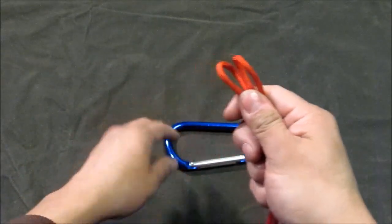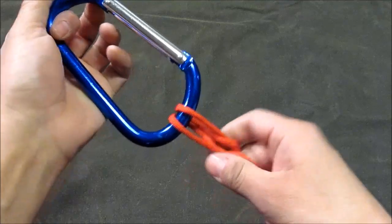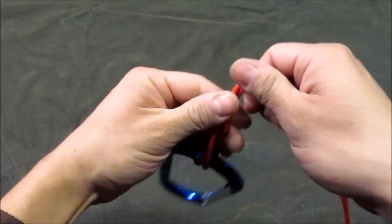And then you'll take your hook and you'll thread it through those loops. And then pull out the slack in each side.